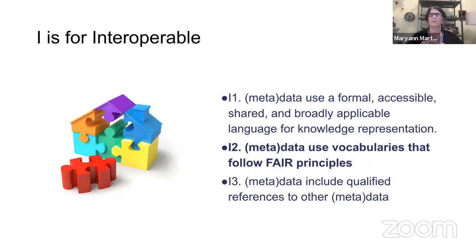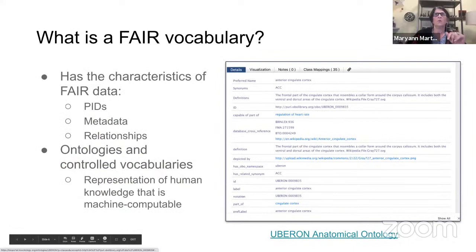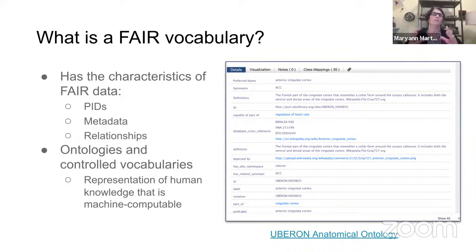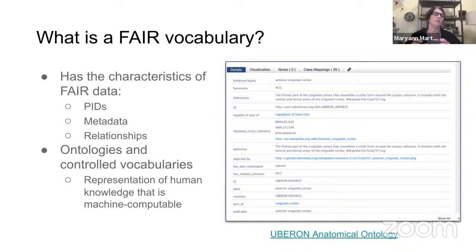FAIR also requires qualified, explicit, meaningful references to other data. This idea of being able to link across things means that if I have two pieces of information in two different places, the relationship between those should ideally be in a machine-computable form. A FAIR vocabulary essentially has the characteristics of FAIR data — persistent identifiers that uniquely identify a particular thing, relationships to other things, and these are characteristic of structures we call ontologies and controlled vocabularies. In its broadest sense, ontologies are representations of human knowledge that are machine-computable.